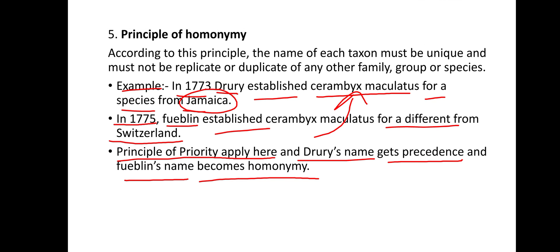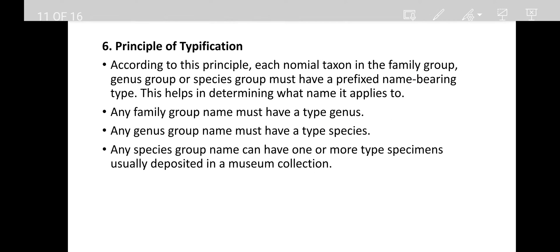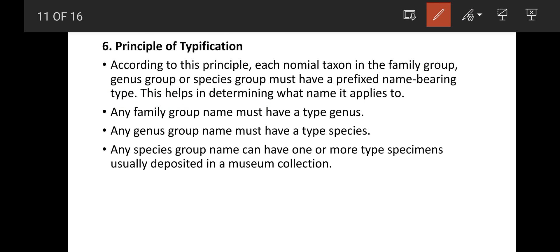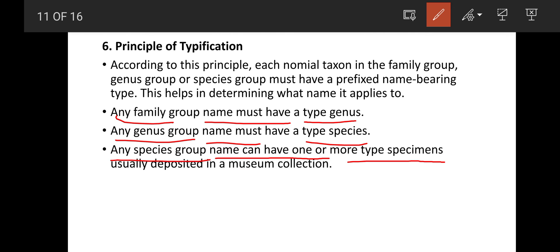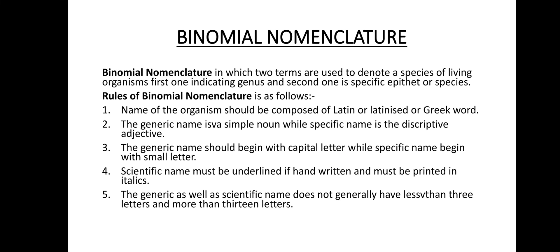The sixth principle is the principle of typification. According to this principle, each taxonomic taxon in the family group, genus group, or species group must have a prefixed name-bearing type, which helps in determining what name applies to it. Any family group name must have a genus type, any genus group name must have a species type, and any species group name can have one or more type specimens, which are usually deposited in museum collections.